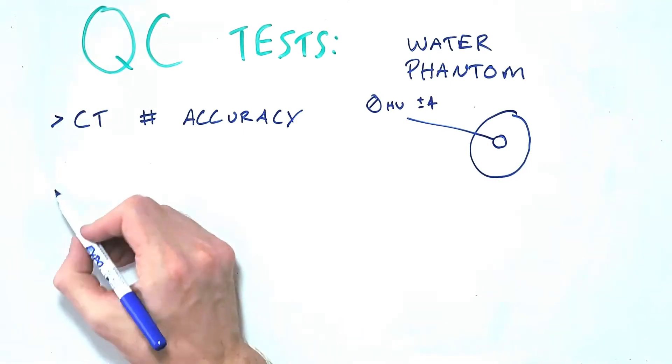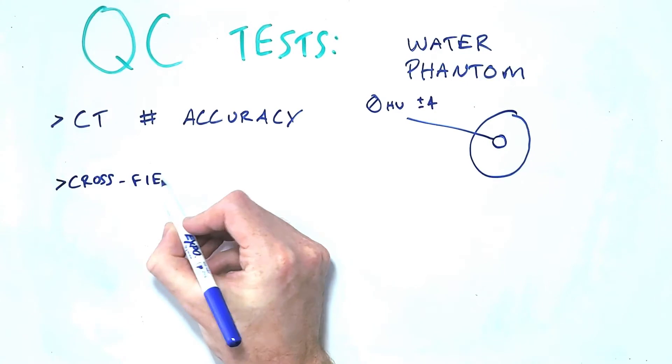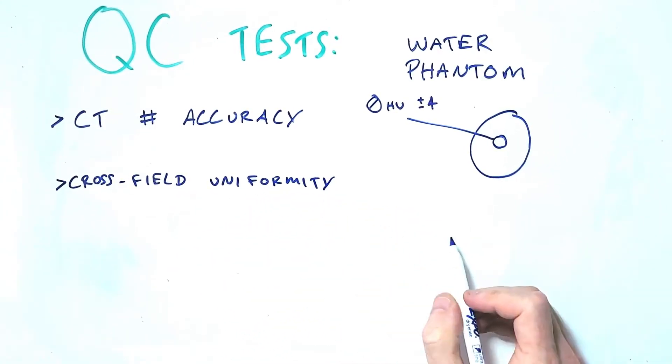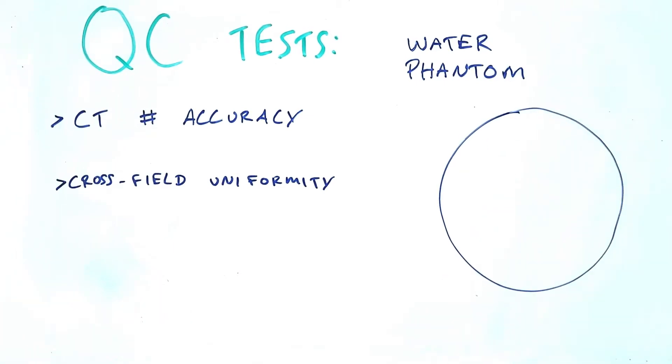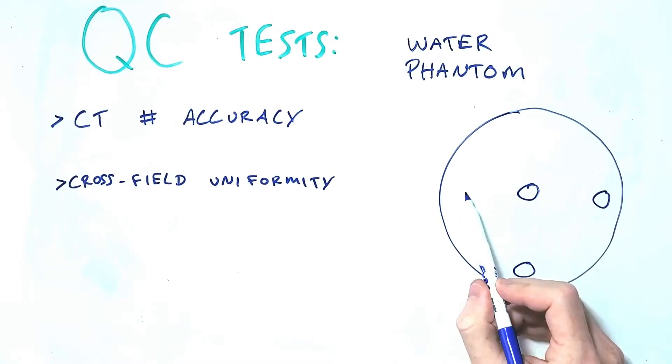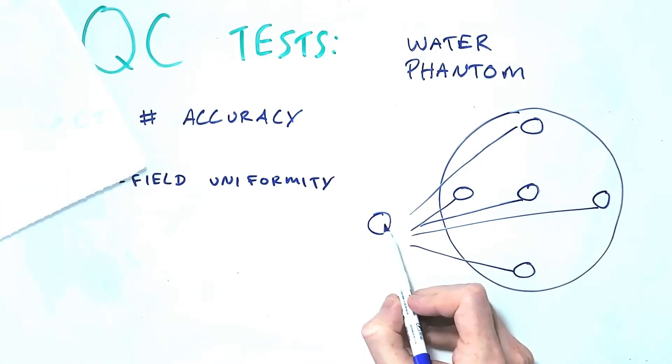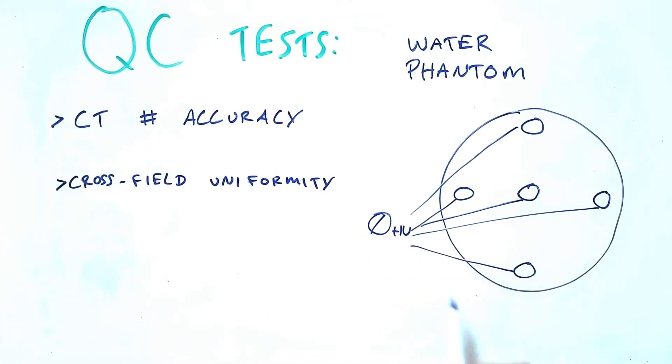When scanning this plain water phantom we can also assess cross-field uniformity and noise in a CT image. Cross-field uniformity is an assessment of whether the CT number of a homogeneous material like water is measured the same at the center as it is at the periphery of the phantom. In CT it's measured by placing one region of interest or ROI at the center of the phantom and then four ROIs around the edges of the phantom. The difference between the center and any of the peripheral measurements should not vary significantly from the baseline amount of variation established for each scanner.